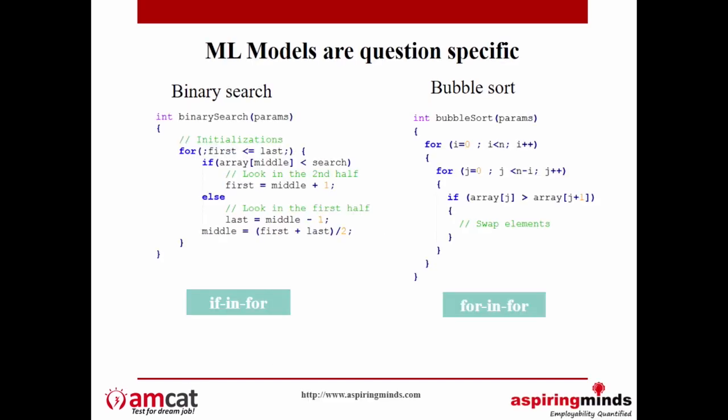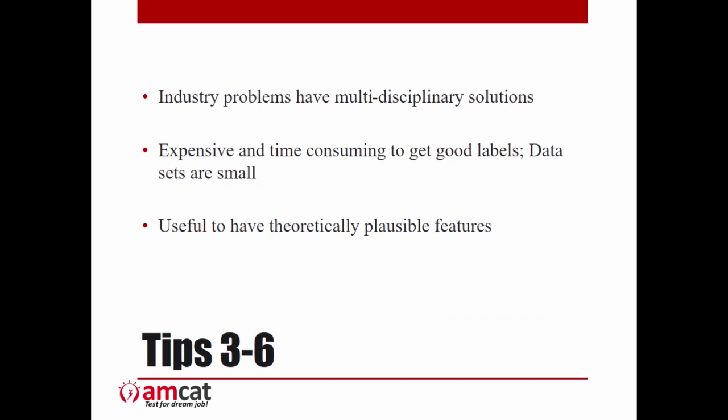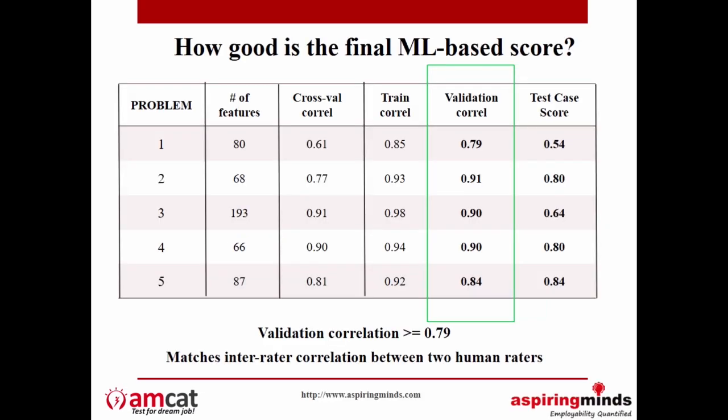A lot of the work we do has small datasets, and you have to use techniques that can work with small data. It's always useful to have theoretically plausible features, which relates to data sets being small and not wanting brittle models. On dataset size: for one programming problem — because these are problem-dependent models and for every programming task you have to build a model — we have seen that you can get good accuracy with around 300 to 400 programs per programming task.